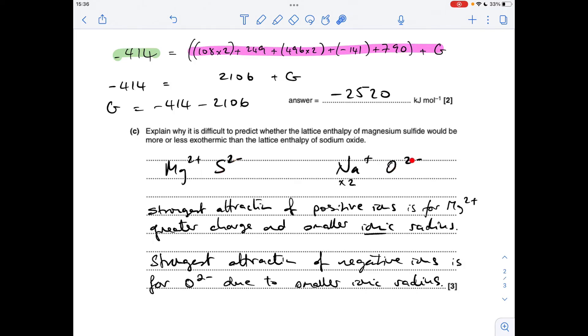Moving on to the negative ions, so S2- versus O2-, it's got nothing to do with the charge because they're both the same. Must be down to the ionic radius, which is the smaller of the two. It's actually the oxide ion, so in terms of negative ions, the oxide ion has the greater attraction, and that's why it's going to be difficult to predict whether the lattice enthalpy of magnesium sulfide is more or less exothermic than sodium oxide.